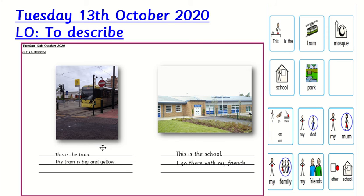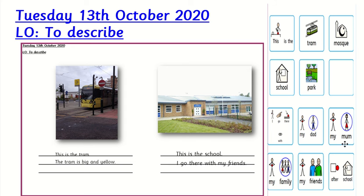For my next sentence, I wanted to add some super adjectives, so I've put, the tram is big and yellow. See if you can have a go at adding some super adjectives as well — that would really impress your teachers. For the next picture, I've done the same thing, looking at my word map to see if it's the tram, is it the mosque, is it the school or is it the park? I know that this is the school. So I've again used my words: this is the school. And I've typed my super sentence there. For my next sentence, I decided to tell a bit more about it. So I've chosen, I go there with — do I go there with my dad, my mum, my family or my friends? I know that I go there with my friends, so I've put, I go there with my friends.